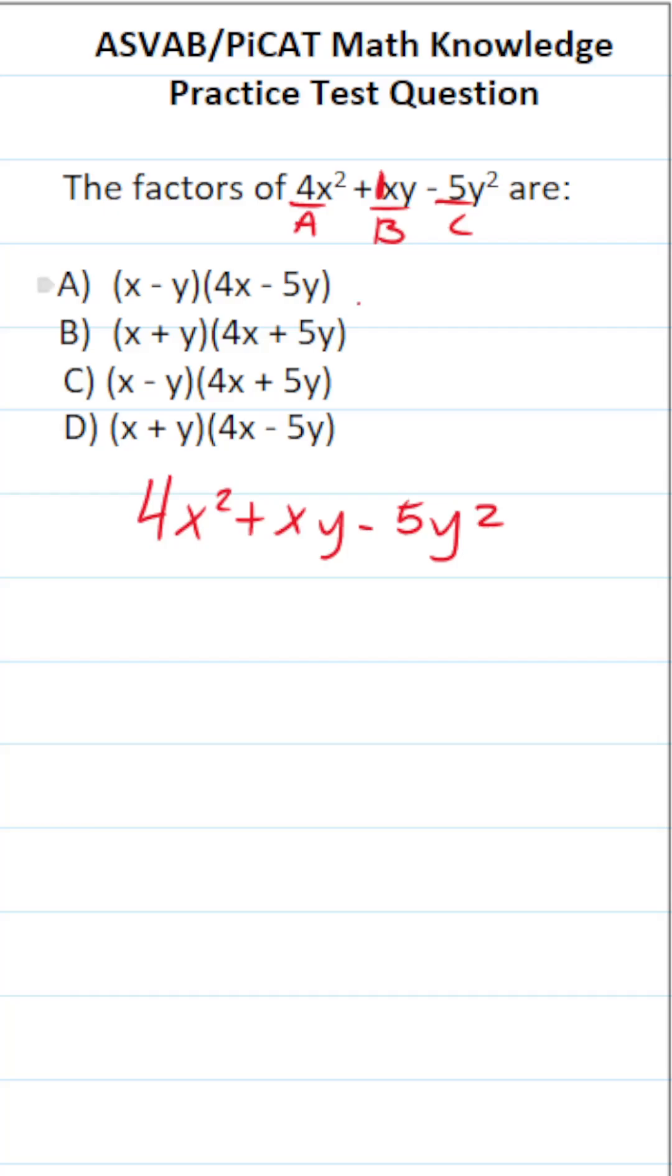The AC method says take a, multiply it by c. 4 times negative 5 is going to be negative 20. Identify b. b is positive 1. We're looking for two numbers that multiply to negative 20 but add to positive 1. That's going to be positive 5, negative 4.